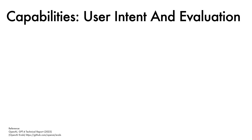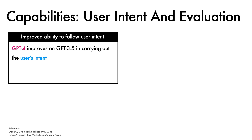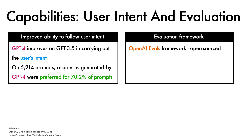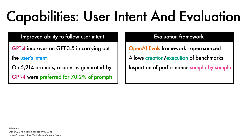In addition to standardized benchmarks, it is also found that GPT-4 improves on GPT-3.5 with respect to carrying out the user's intent. On a collection of over 5,000 prompts, it was found that responses generated by GPT-4 were preferred for 70.2% of prompts. To assist with evaluation, the team has open-sourced the OpenAI evals framework, which allows for the creation and execution of benchmarks and inspection of performance sample-by-sample, and also has the ability to track the performance of deployed models.